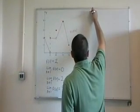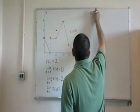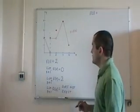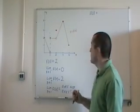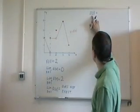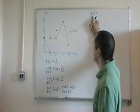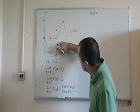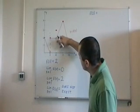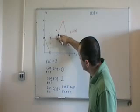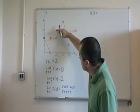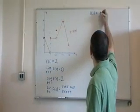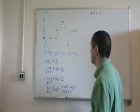Let's move on to f of 2. Just like before, this means when the x value is 2, what is the corresponding y value? When x is 2, you go up to where it hits the curve — it passes through there, but it does hit there. Going across, the corresponding y value is 3.